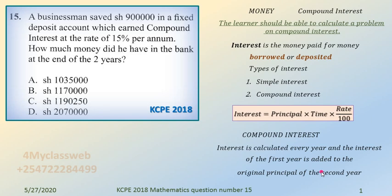To calculate compound interest, the interest of the first year is added to the original principal, and then you work out the next interest. Since the money stays in the bank for two years, you first calculate the interest of the first year the normal way you calculate simple interest, but with time equal to one. That interest is then added to the principal, so when it comes to the second year you have a new principal, which includes the original principal plus the first year's interest.